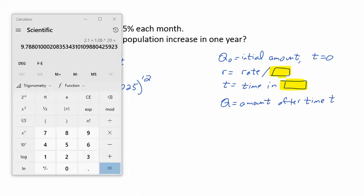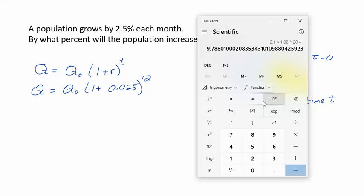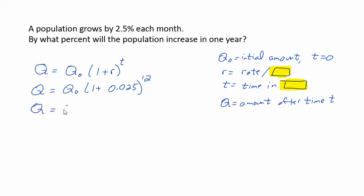So if we come over here and we punch this stuff in, and we do 1.025 to the 12th power. That's gonna come out to be, let's round this to 1.345. So I get Q equals Q0 times 1.345.